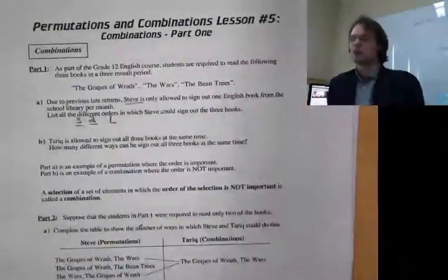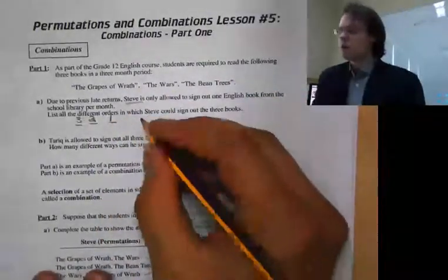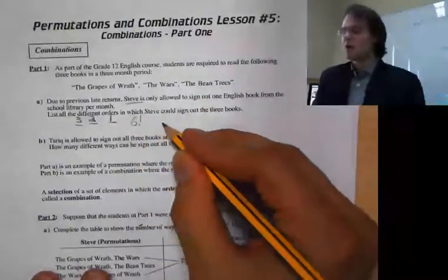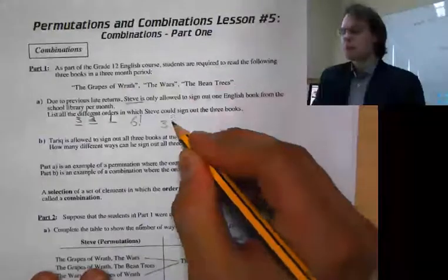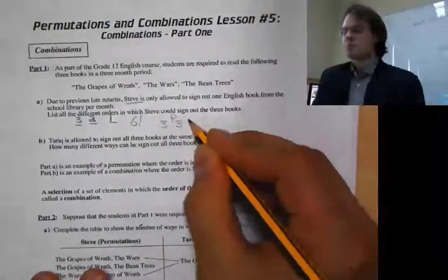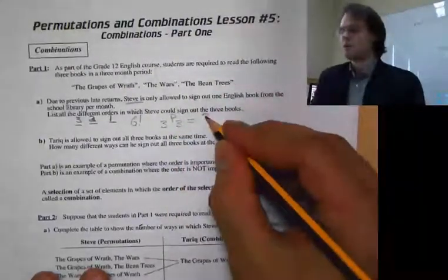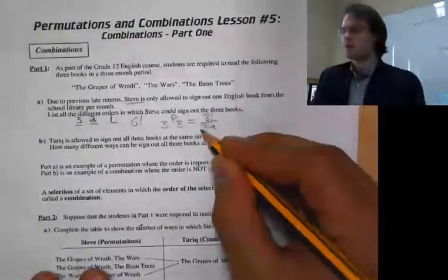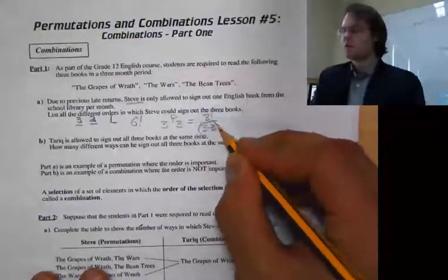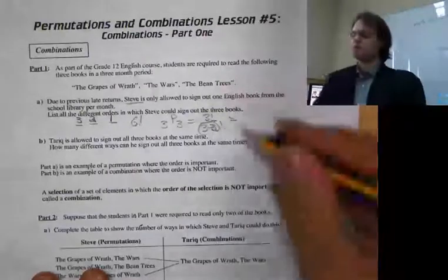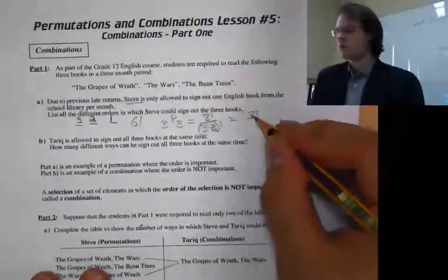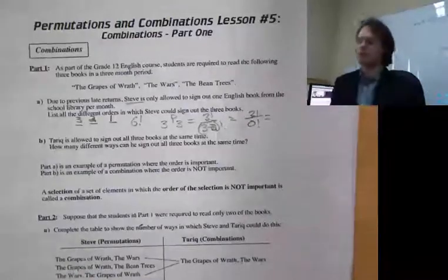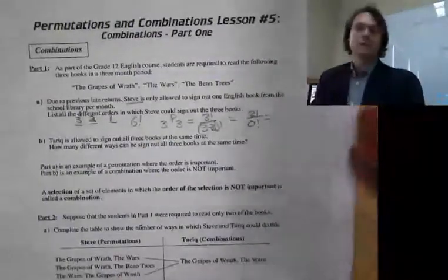After he's done two of them, he only has the last one to sign out, and he's good. So this is 3P3 — out of three we are picking three — which is three factorial all over three minus three factorial. Three factorial all over zero factorial. Remember, zero factorial is always equal to one.